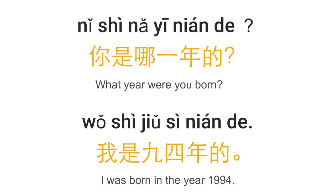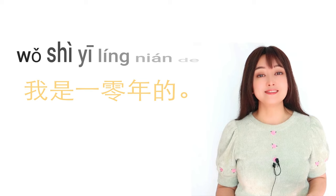For people born after 2000, you'd say 我是零二年的 for the year 2002, or 我是一零年的 for the year 2010. So remember: 你是哪一年的?